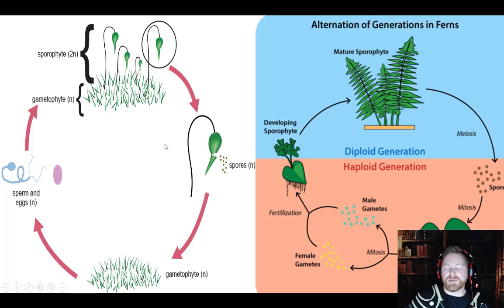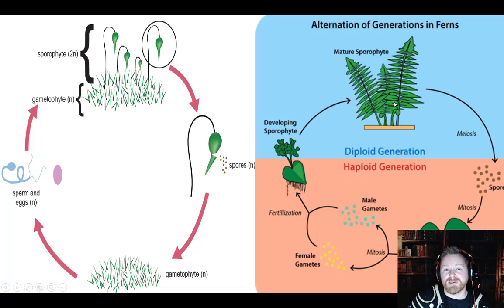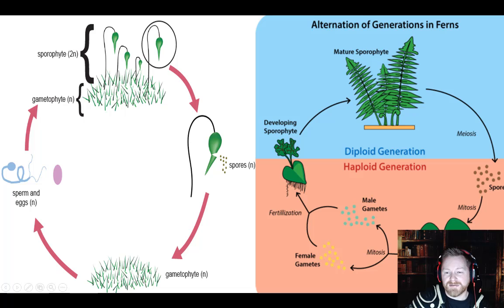But in vascular plants, it's totally opposite. In the alternation of generations of vascular plants, the sporophyte is dominant and it's pretty big. That's going to produce spores. Those spores grow into the gametophyte, which is really, really tiny. This is the prothallus — the gametophyte of a fern.